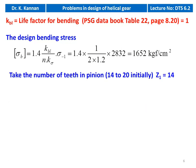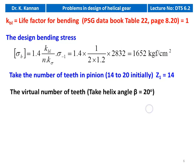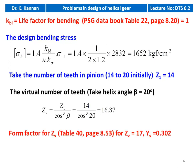We take the number of teeth on the pinion Z1 = 14 and helix angle β = 20° (assumed since not given in the problem). Virtual number of teeth: Zv = Z1 / cos³β = 14 / cos³20° = 16.87. Form factor Yv for Zv = 17 is Yv = 0.302. We take ψm = b/m = 10 initially.